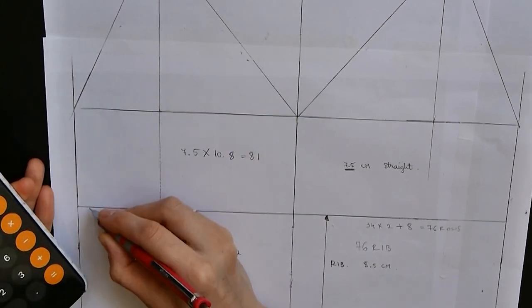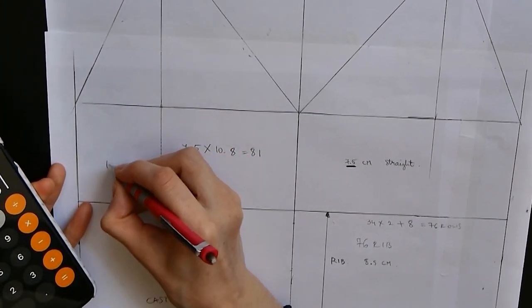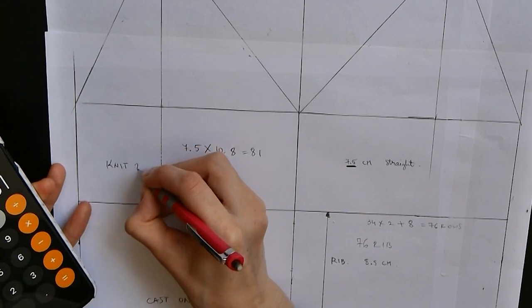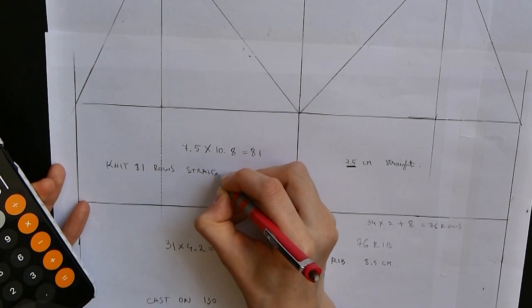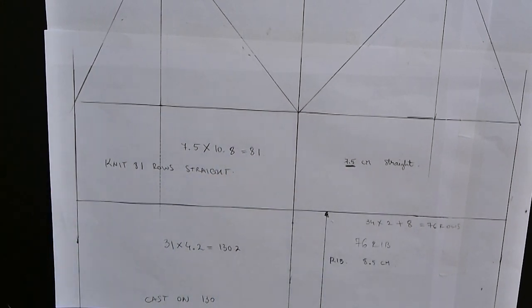So let's recap all the things that we know. I know that I have to cast on 130 stitches, then knit 76 rows of 1 by 1 rib. Then I'm going to transfer all my needles onto my main bed and I'm going to knit 81 rows straight.